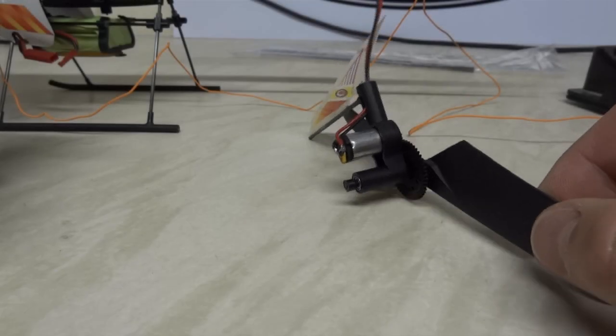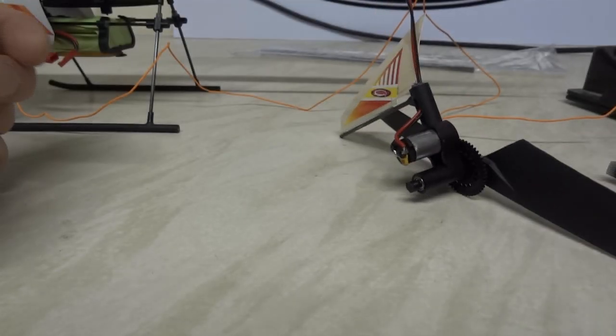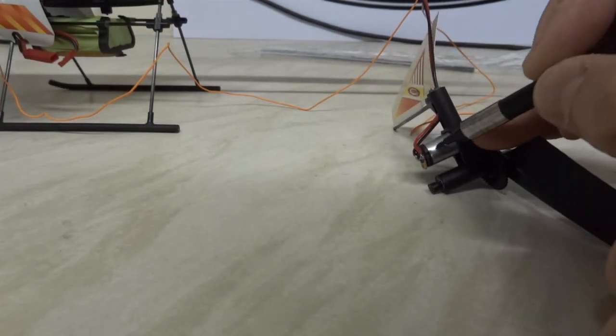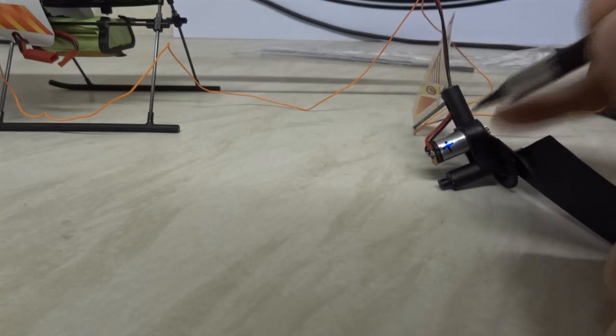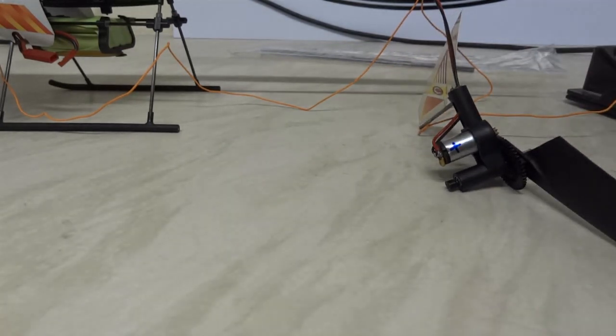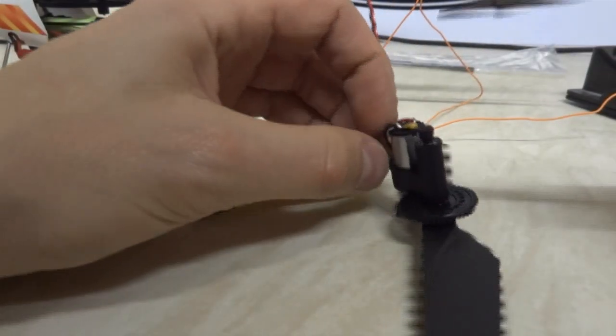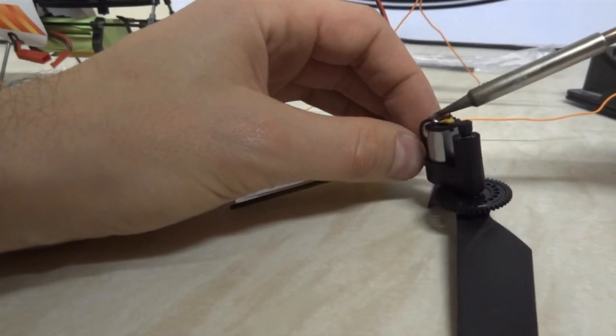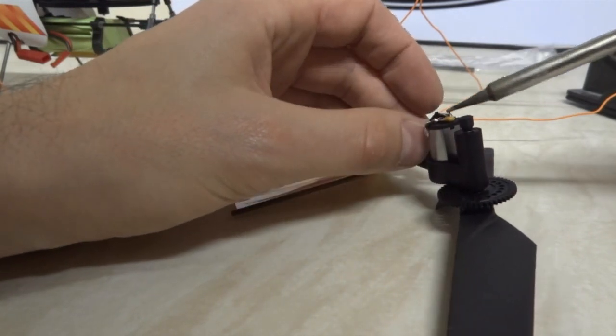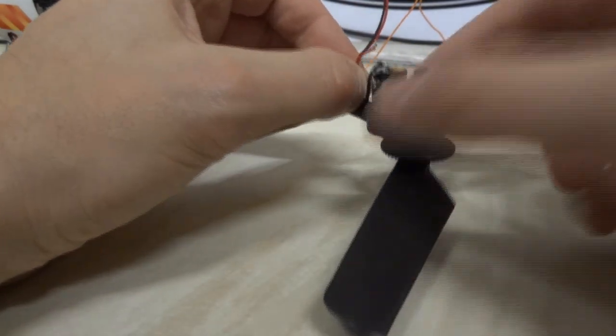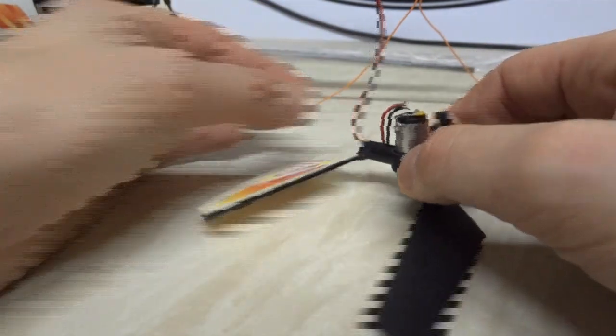So the first thing is to desolder the wires from the motor. Obviously we want it to spin the right way still when I put it back together. So I'm just going to mark the motor on the positive side with a little positive symbol and then I'll remember which way around it is. So I've got my soldering iron ready and I'm just going to attempt to desolder these. There we go, and we can pull those wires out through the tube.